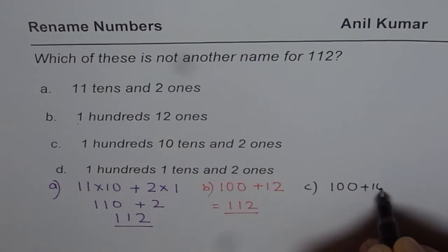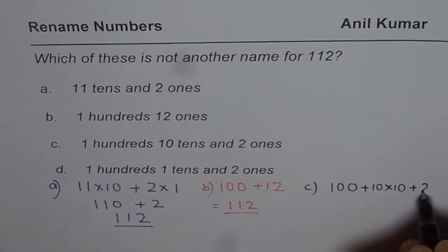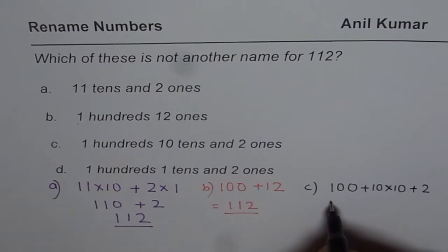10 tens plus 10 times 10 plus 2 ones plus 2, so 10 times 10 is 100, so 100 plus 100 is 200, so we have 202.